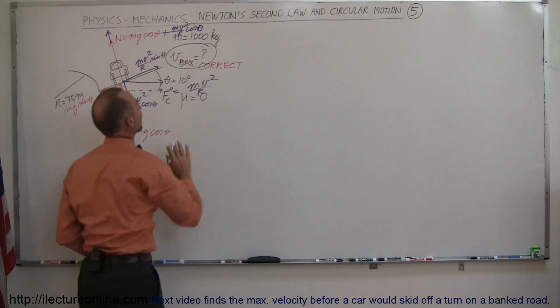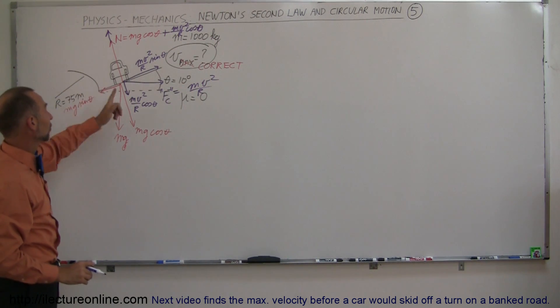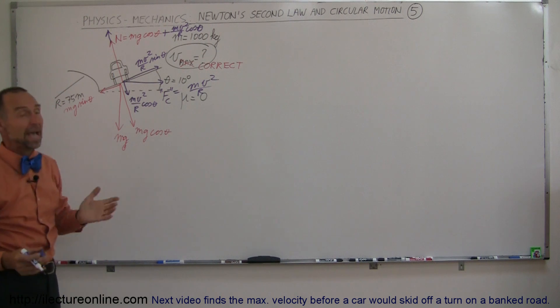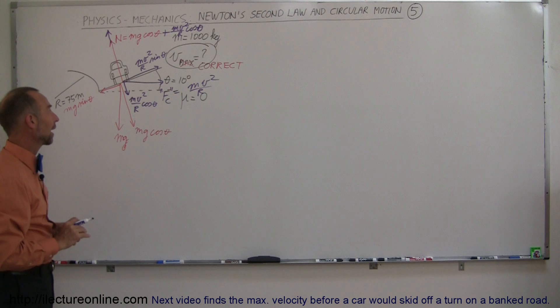so there would be plus the mv squared over R times the cosine of theta. Now we don't really worry about that in this problem, but just so that you realize that because of the centrifugal force, there's additional push of the car against the road, there'll be a bigger normal force pushing back. So in the case that we have friction there, we do have to take that into account.